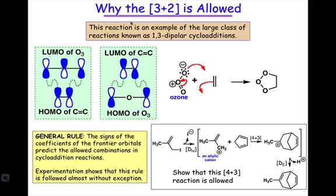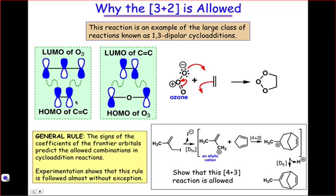The 3 plus 2, on the other hand, is an allowed reaction and is a key part of the mechanism of ozonolysis. Using either set of frontier orbitals, we can imagine two constructive interactions leading to the formation of two bonds in a concerted manner at the termini of the pi systems. You should note here the similarity between the ozone MOs and the MOs of the owl system.